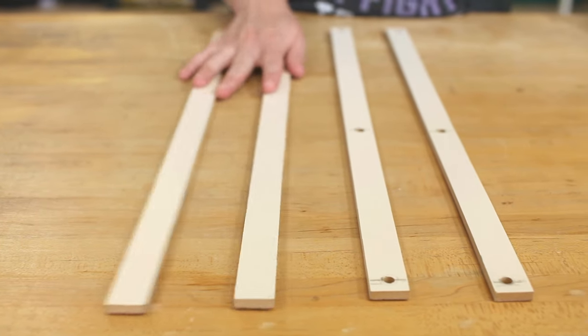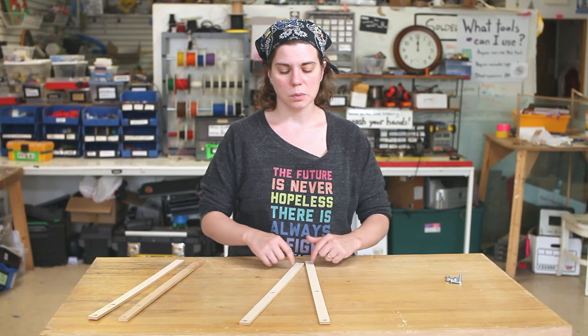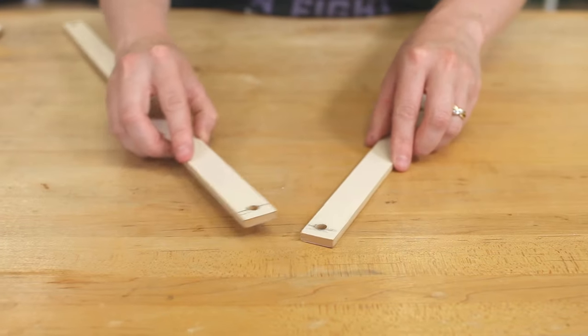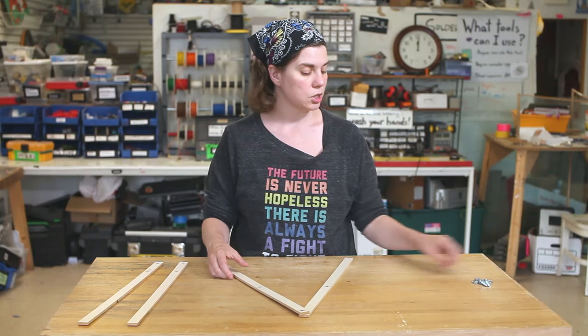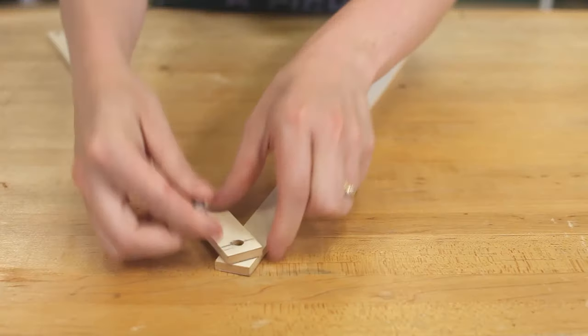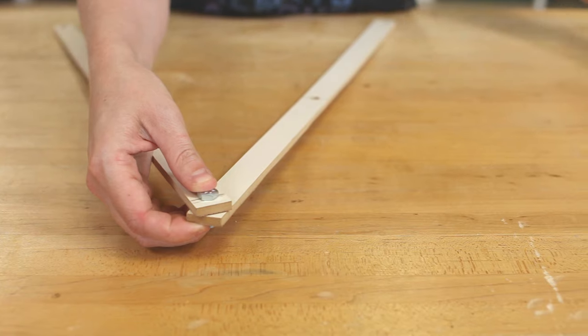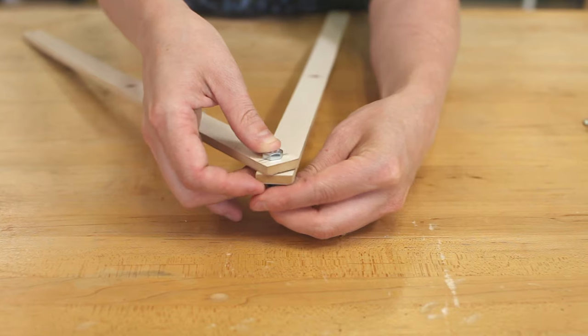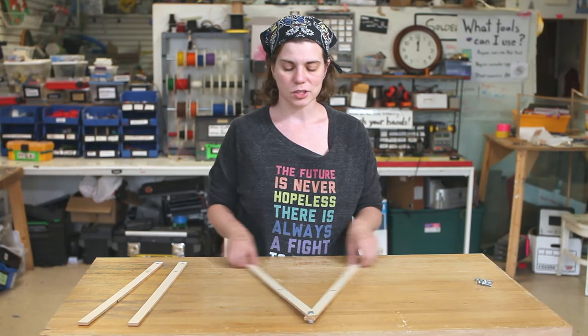We're going to start with our long pieces. Set aside your two hole piece and start with the long pieces that have three holes in them. You're going to put the short side, your eight inch gap, so it's towards you and make a V shape. You're going to drop a bolt in there to hold it together. I've got my bolt, my washer, and my nut. And we've got a nice V shape.